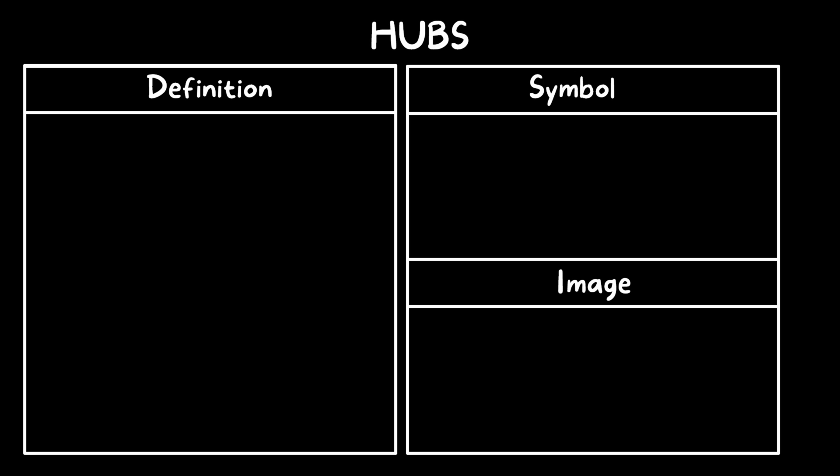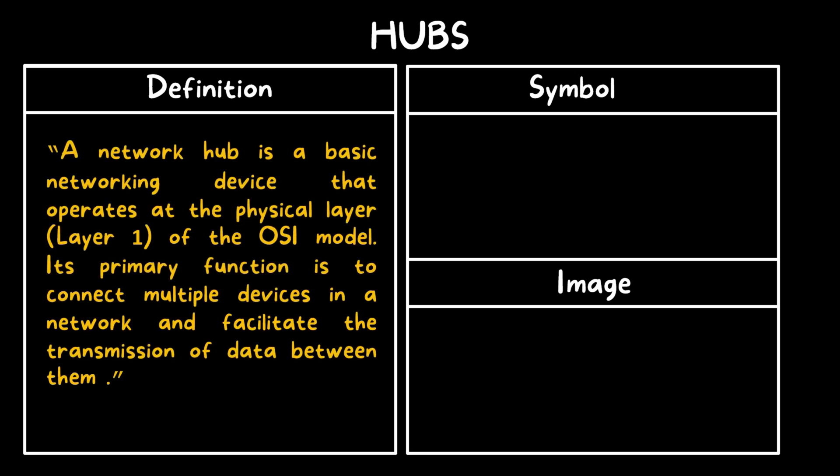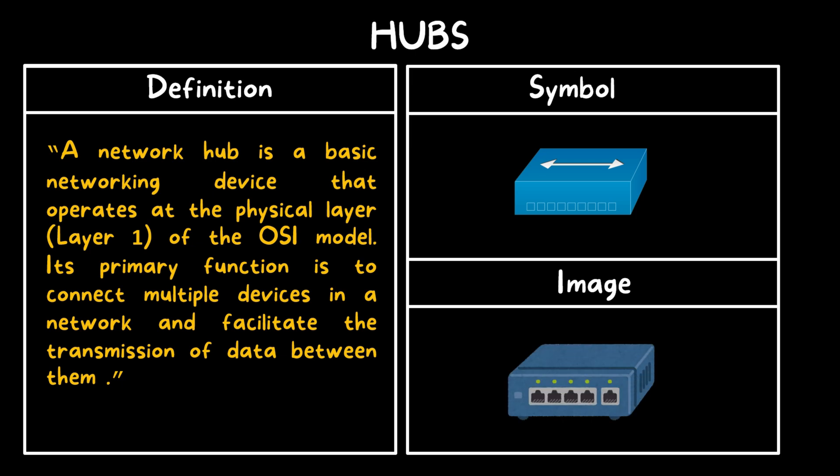What is a hub? A network hub is a basic networking device that operates at the physical layer of the OSI model. Its primary function is to connect multiple devices in a network and facilitate the transmission of data between them. The symbol and real image of a network hub are shown on the screen. Hubs are first-generation devices because in Ethernet history, the hub came first as a network device.